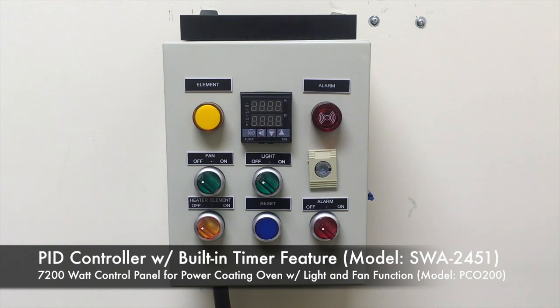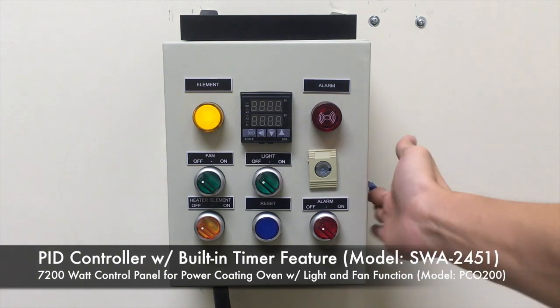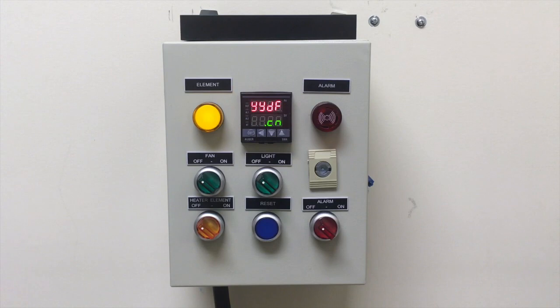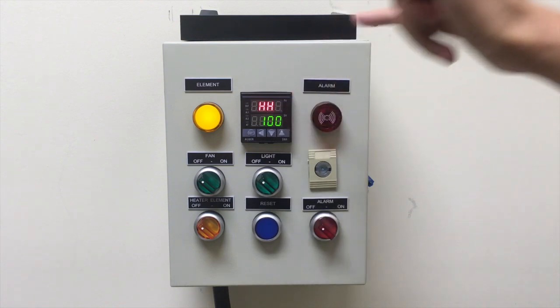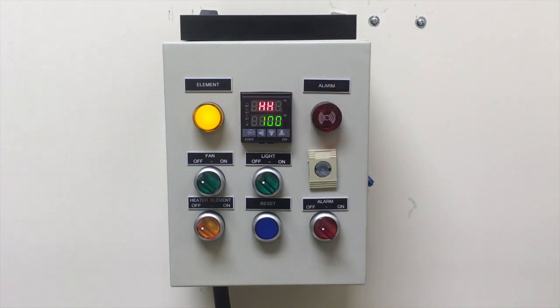Now this is a PID temperature controller with a timer as well, so it's super useful for applications that require both precise temperature and time control. As you can see on our PV or process value line, it reads out HH, meaning that our sensor is either not connected or not connected properly.